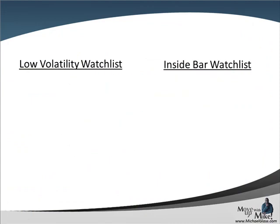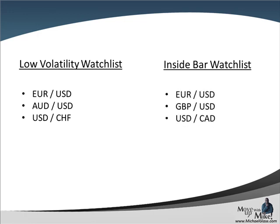As we come to our watch list, we have our low volatility watch list, which is our one-hour time frame using Bollinger Bands where we watch the upper and lower bands and see if we can get a break in the direction of the trend. We have the euro dollar, the Aussie dollar, and the dollar franc. For our inside bar watch list, we're watching Friday's range compared to Thursday. We've got a ton of inside bars — we've got the euro dollar, the pound dollar, the dollar Canadian, the dollar yen, the euro yen, and the pound yen. And technically the Aussie dollar, although it did break a little bit lower than Thursday's low. We'll hope to see some breaks in the direction of the existing trend.